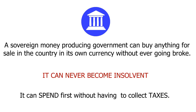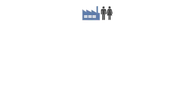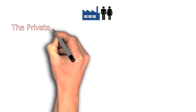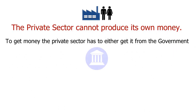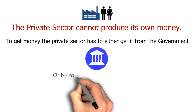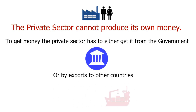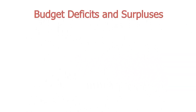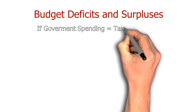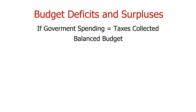It can never become insolvent. Most importantly, it can spend first without having to collect taxes. The private sector, on the other hand, cannot produce its own money. To get money, the private sector has to either get it from government or through exports to another country. To further understand the relationship between the government sector and the private sector, we need to consider how they relate to the budget. When the amount of money the government sector collects in taxes is exactly equal to the amount it spends, the government is said to be running a balanced budget.